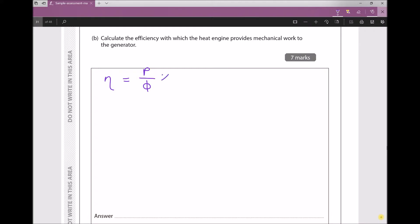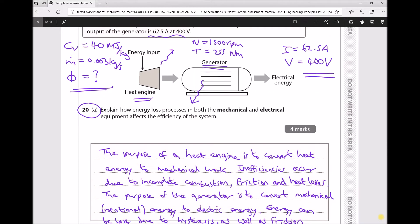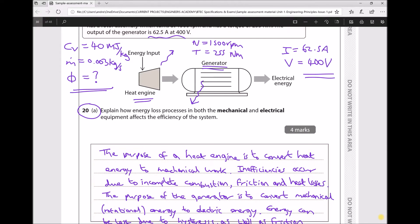Now the mechanical power can be found by doing 2πNT divided by 60. And the heat energy can be found by doing the mass flow rate of the gas times the calorific value. So let's just refer back to our question and double check our values. We have rotational speed of 1500 and torque of 255. We have a calorific value of 40 megajoules per kilogram and a mass flow rate of 0.003.